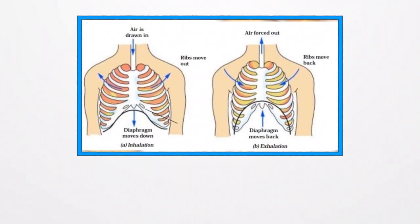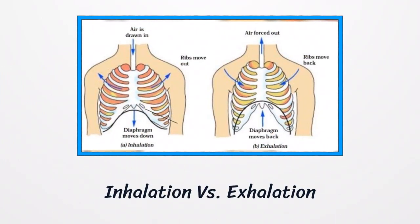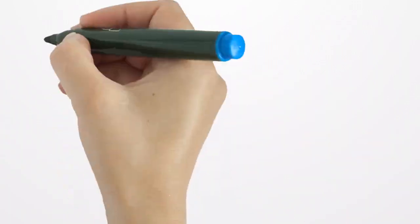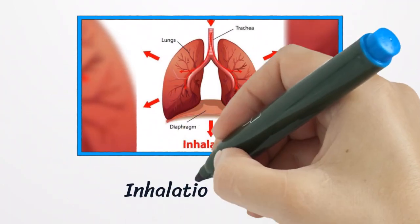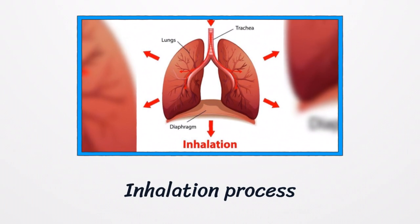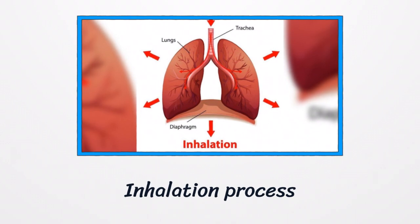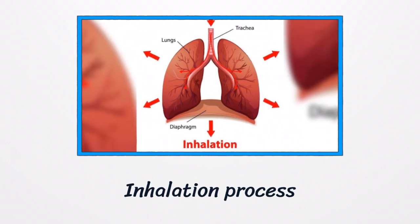So how do we breathe? The two processes through which we breathe in and breathe out are called inhalation and exhalation respectively. Many conditions must be met for these two processes to happen. For example, to inhale or to breathe in, our diaphragm moves downwards and your ribs move outward and upward to leave more space for your lungs to be filled with air.